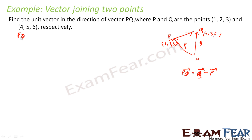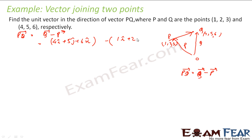So my PQ vector is Q vector minus P vector. What is Q vector? 4i + 5j + 6k. That is my PQ vector.